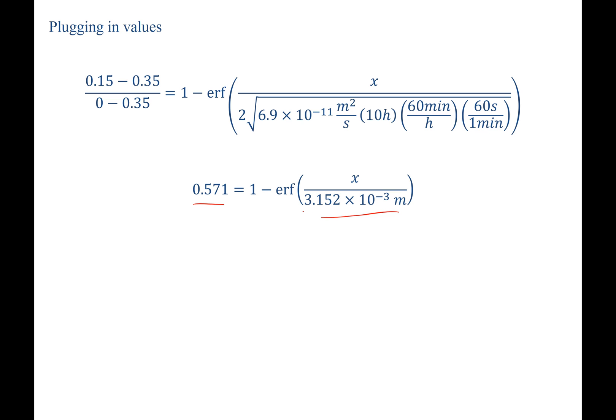For just a moment, let's call everything inside of this error function z, which allows us to write 0.571 equals 1 minus the error function of z. Therefore, the error function of z equals 0.429.